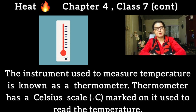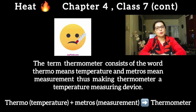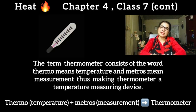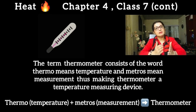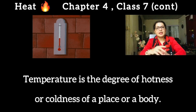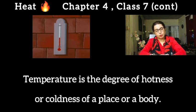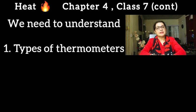The instrument used to measure temperature is known as a thermometer. The word 'thermometer' is derived from two words: 'thermo,' which means temperature, and 'metros,' which means measurement. So thermometer means an instrument used for measuring temperature. Another important thing to understand is the definition of temperature — temperature means the degree of hotness of an object.